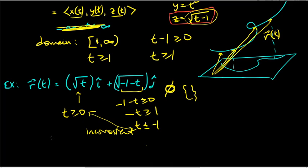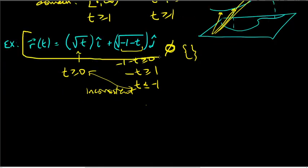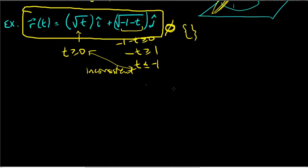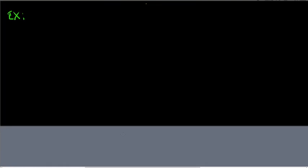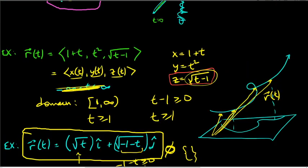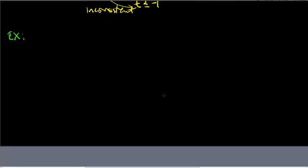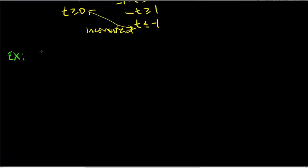The values of t in the domain must satisfy all component functions simultaneously — all three components in space, or both components in the plane. Let's look at a familiar example: a circle of radius 5. So x = 5 cos t and y = 5 sin t, with t from 0 to 2π.